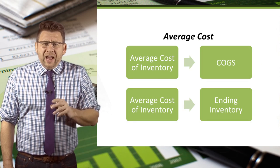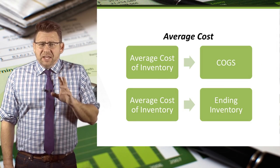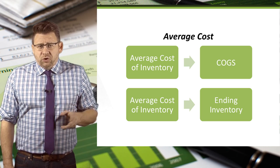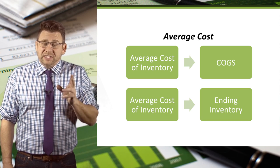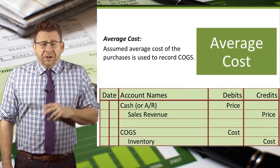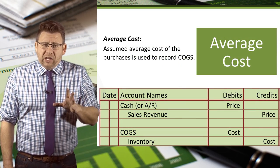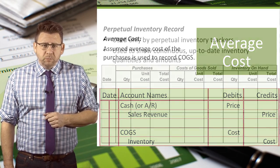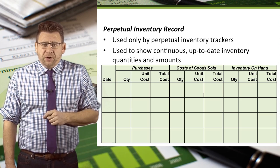Under average cost inventory, businesses compute an average cost per unit. Ending inventory and cost of goods sold are then based on the same average cost per unit. Under the average cost method, an average price is calculated and applied to all goods.